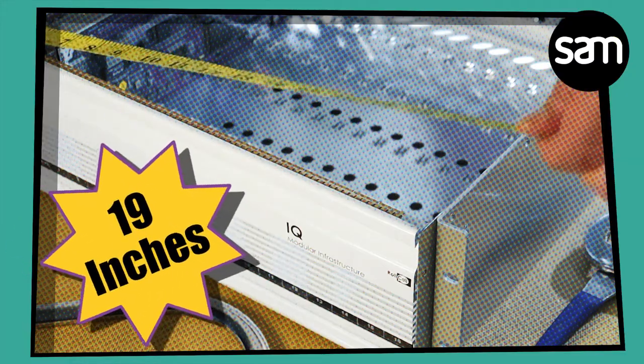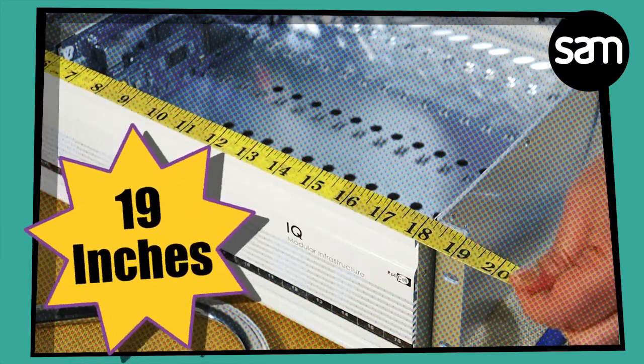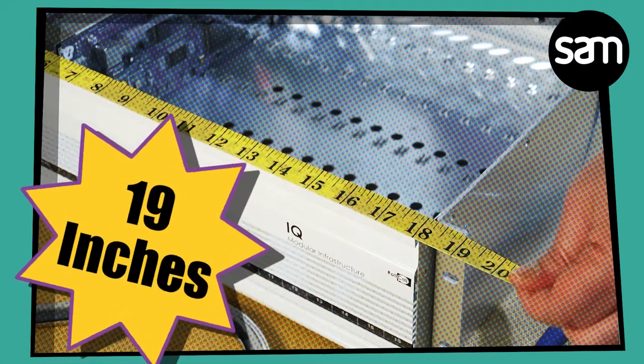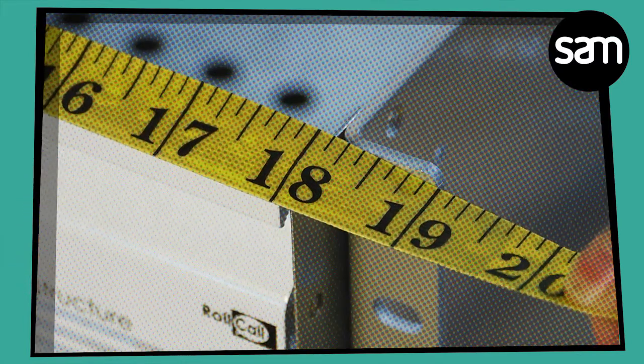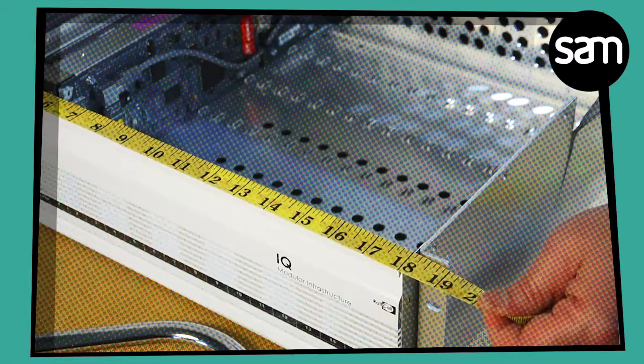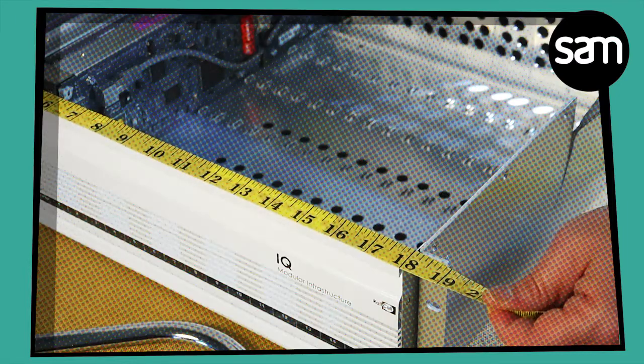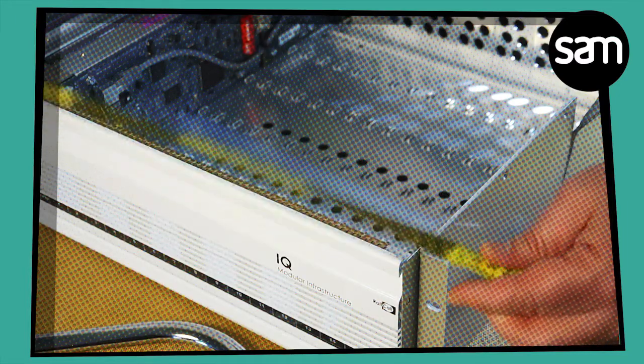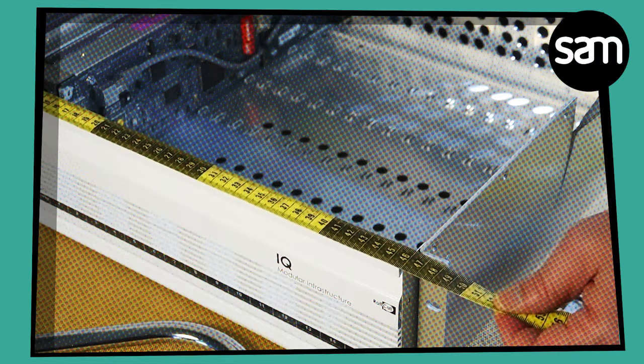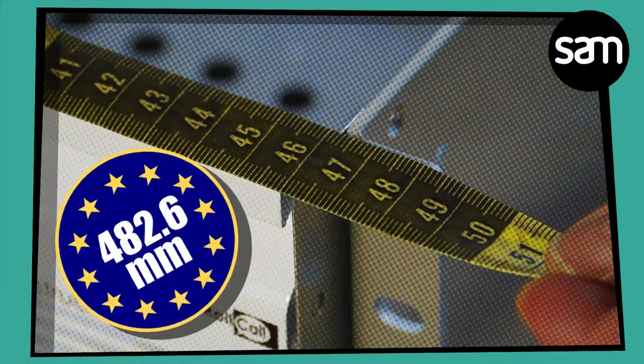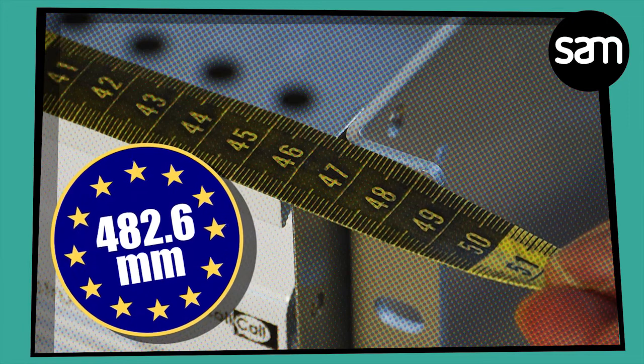What's more, every SAM chassis is built to be precisely 19 inches wide. A recognized width used extensively in broadcast environments across the world today. And don't worry if you are somewhere that isn't America, because our rack size also meets the Eurozone regulation width of exactly 482.6 millimeters.